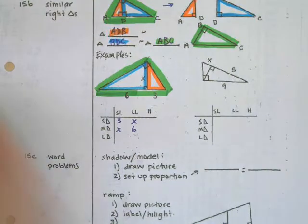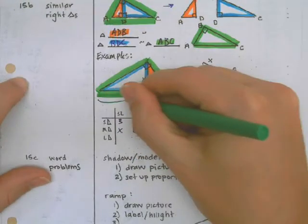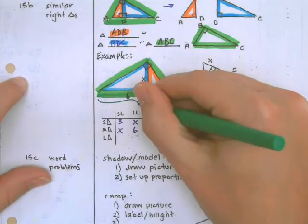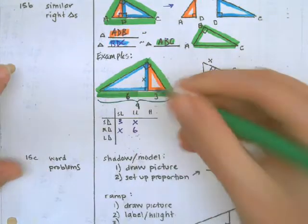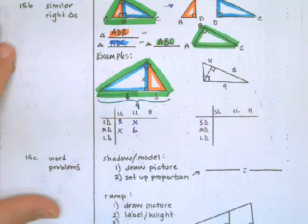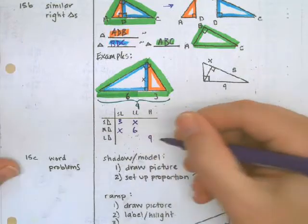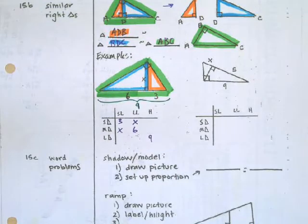But we could add together six and three to make nine for the hypotenuse. So we filled in as much of this table as we can.